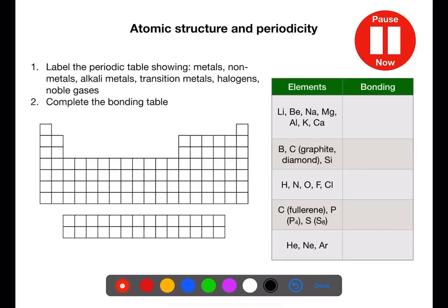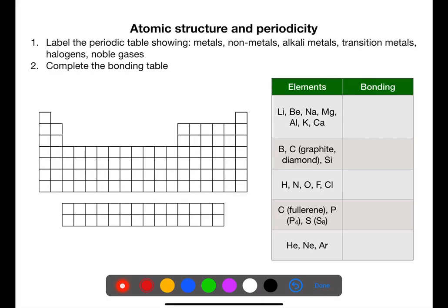Pause the video and label the periodic table to show metals, non-metals, alkaline metals, transition metals, halogens, and noble gases. Then complete the bonding table for the first 20 elements. On the periodic table there is a stepped line which separates the periodic table into two. On the left of the stepped line we find the metals and on the right of the stepped line we find the non-metals.